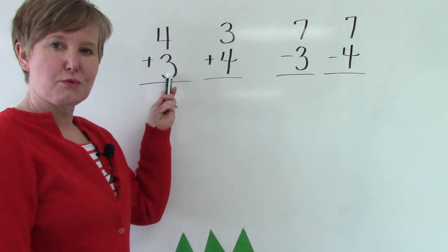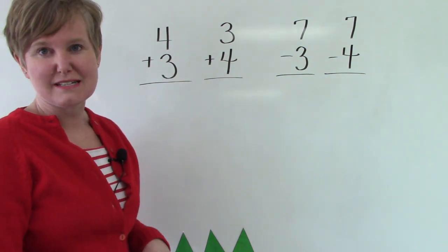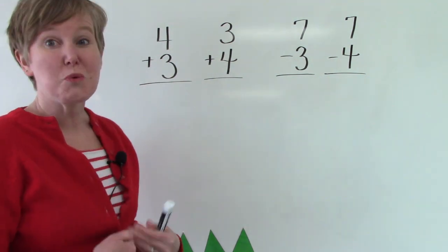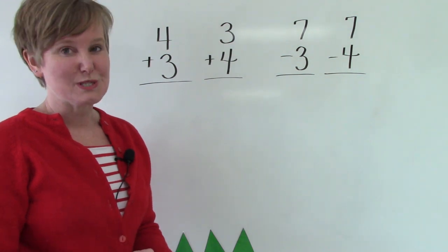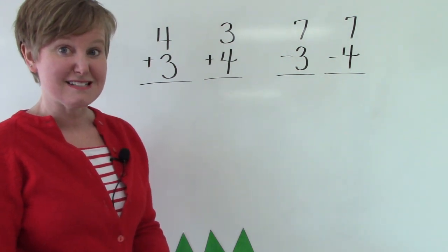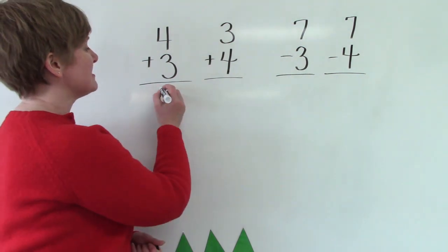If we have 3 plus 3, we know our answer is 6. But 4 is just one more than that. So instead of 3 plus 3 being 6, it's 3 plus 4 is 7.